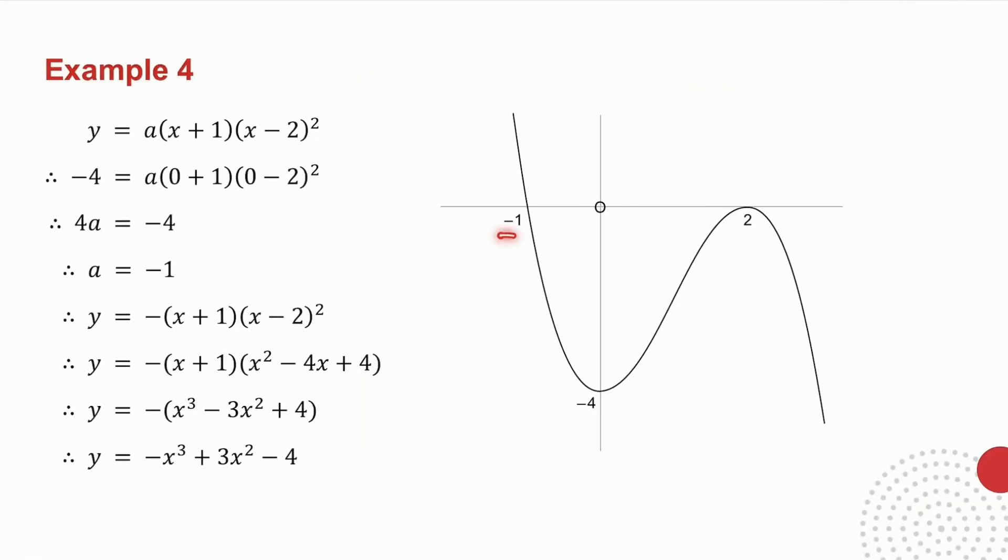The x-intercept of minus 1 comes from a bracket x plus 1. The x-intercept of 2, because it is a turning point, comes from x minus 2 squared. And what I do is I put an a in front. Now they've given me the y-intercept. The y-intercept has a coordinate 0, minus 4. So what I do in place of x goes 0 and in place of y goes minus 4. And I solve for a.